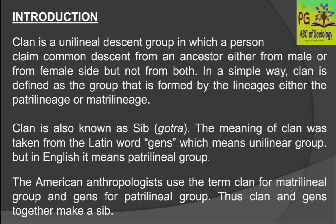In simple terms, a clan is defined as the group formed by lineages — either patrilineages or matrilineages. Clan formation happens when many lineages come together; those lineages can be patrilineal or matrilineal, where you can trace your ancestors either from the male side or the female side. Clan is also known as 'sib', which is also called 'gotra' — a term you may already be familiar with.